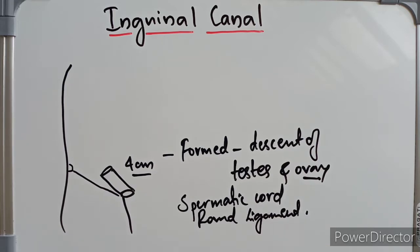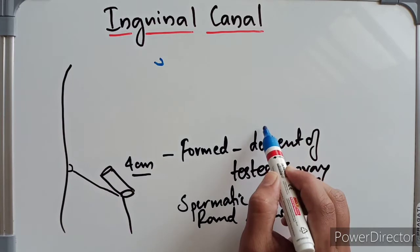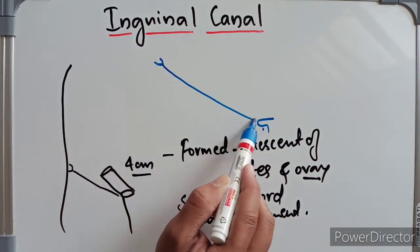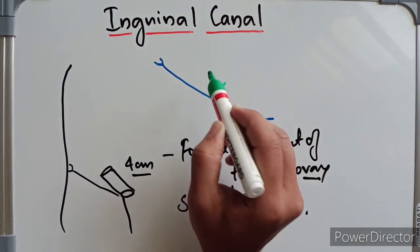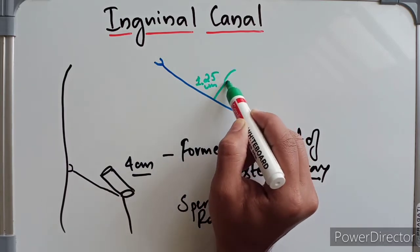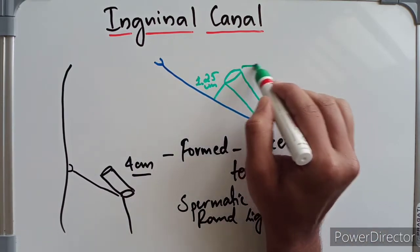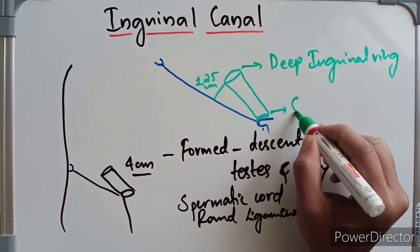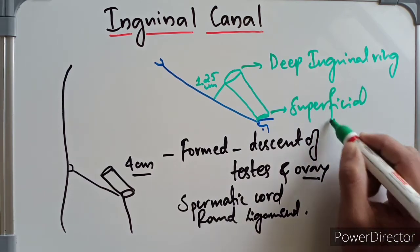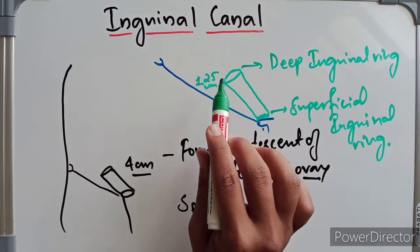Coming to the extent and direction of the inguinal canal: it extends from the deep inguinal ring to the superficial inguinal ring. It lies about 1.25 centimeters above and parallel to the inguinal ligament, extending obliquely along the middle half of the inguinal ligament. Here we have the deep inguinal ring on one end and the superficial inguinal ring on the other.